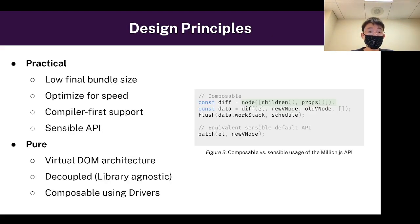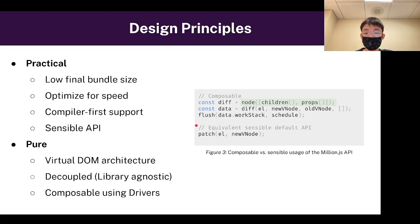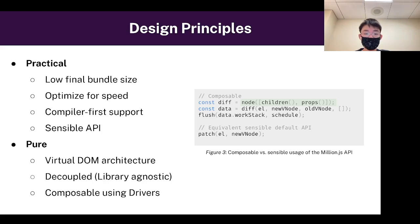I want my library to be both practical and pure — lightweight, fast, modern, and very easy to use. As you can see, there's a very sensible API to render the user interface. I want my library to be very pure, so I focus on one architecture: the virtual DOM architecture. This way, the developer only needs to learn one architecture. Additionally, I want my library to be very decoupled, or library agnostic, so you can develop a wide range of paradigms and concepts on top of Million.js.